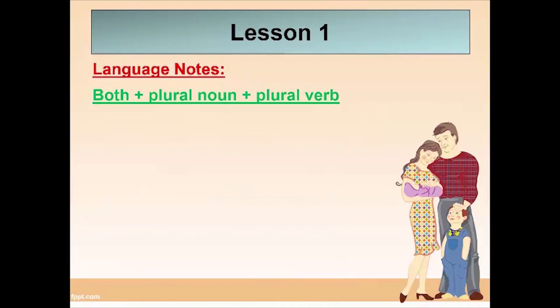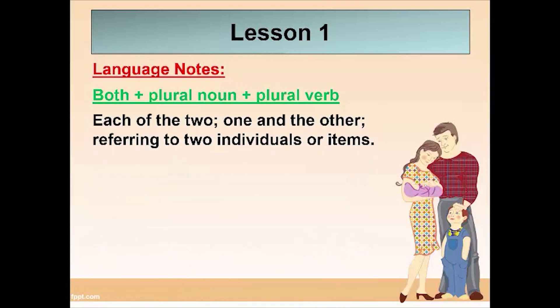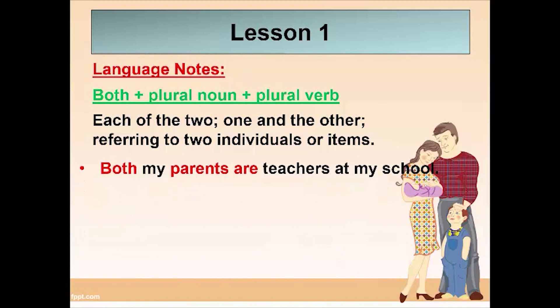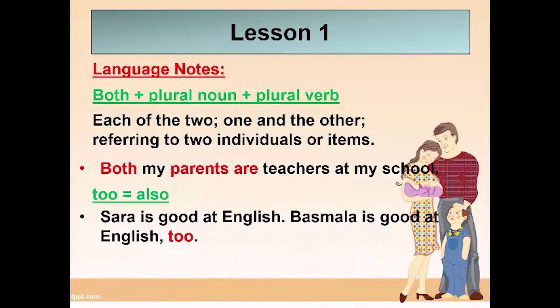Here we have some language notes. The first note is the rule of 'both': both plus plural noun plus plural verb. 'Both' means each of the two, or one and the other, referring to two individuals or items. For example: 'Both my parents are teachers at my school.' 'Too' means also: 'Sarah is good at English. Basmela is good at English too.'